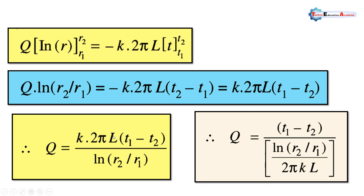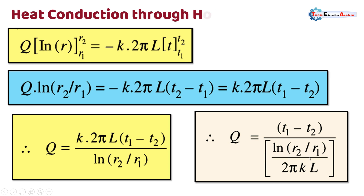Now we compare this with the electrical circuit analogy. In an electrical circuit, current flows due to voltage difference and in the denominator there is electrical resistance. Similarly, in a thermal circuit, heat flows due to temperature difference and in the denominator there is thermal resistance. Rearranging this equation, the temperature difference is in the numerator and the remaining term ln(r2/r1)/(k·2πl) is the thermal resistance.